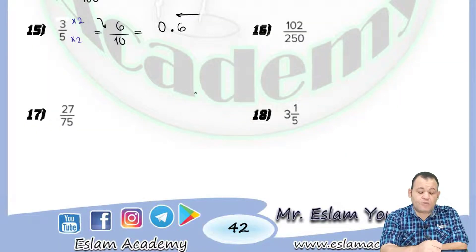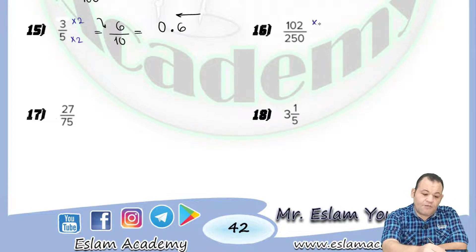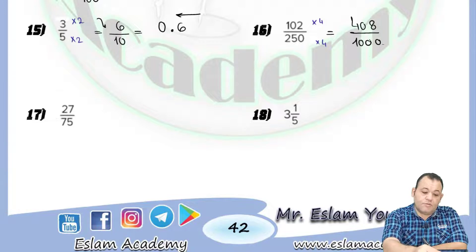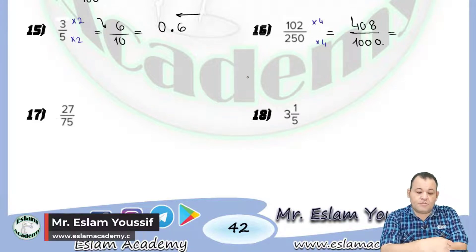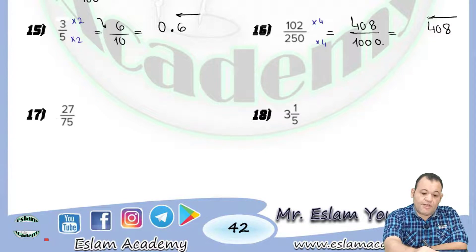For question number six, we have 102 over 250. The denominator is 250, which is twenty-five multiplied by ten. Since we have twenty-five, multiply numerator and denominator by four. Four times 102 equals 408, and twenty-five times four equals one hundred — so we get 408 over 1000. Write 408 without change; because we have three zeros, count three places from right to left and put the decimal point. There is no whole number, so the answer is 0.408.